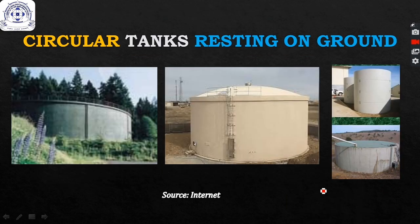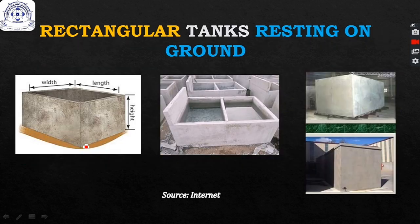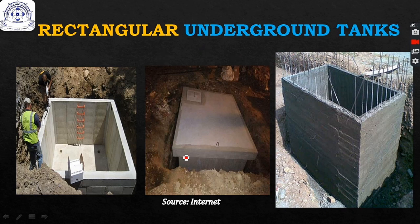Pictures collected from the internet show different types of tanks: circular tanks resting on ground used to store different types of liquids, rectangular tanks resting on ground, circular underground tanks which save space, and rectangular underground tanks buried below the ground surface.